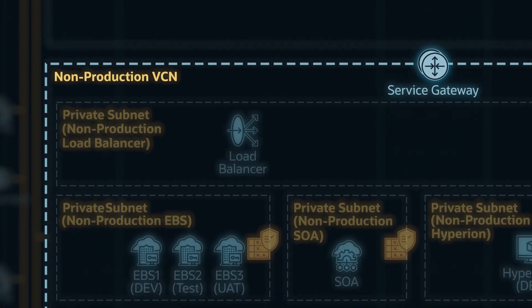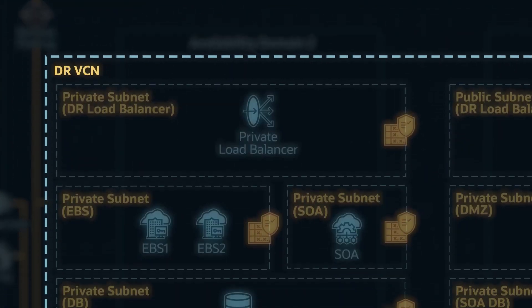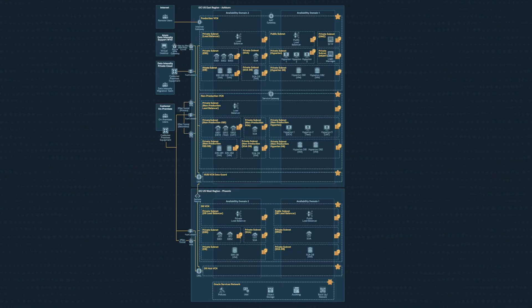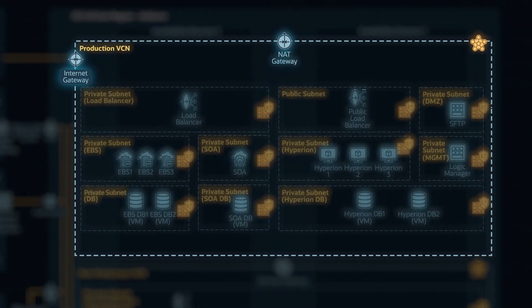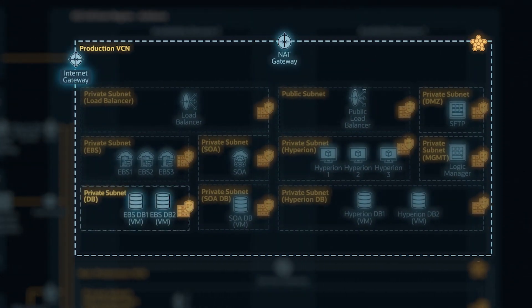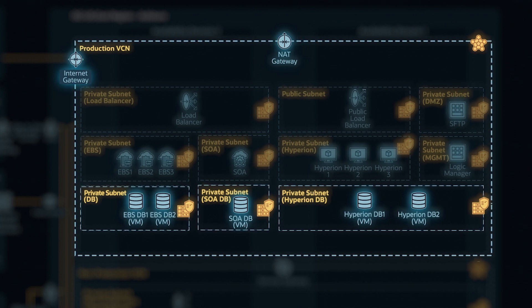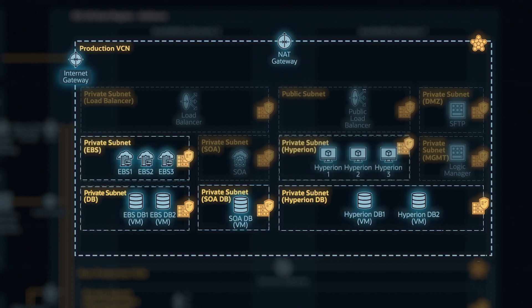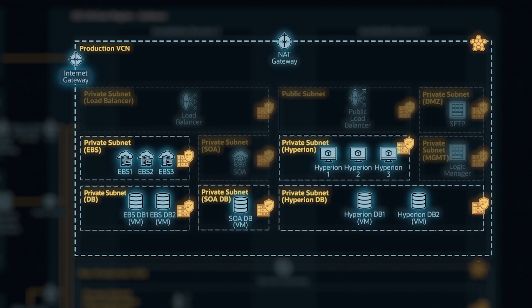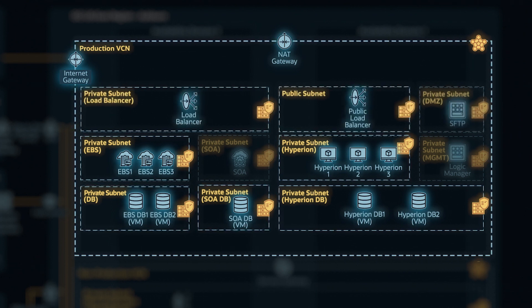And then we have another VCN in the DR region — there's only one VCN for disaster recovery. Within each VCN, we have multiple subnets: we separate the database subnet, the application server subnet, and we also separate E-Business Suite, Hyperion, OBIEE, and the other servers. They are separate.